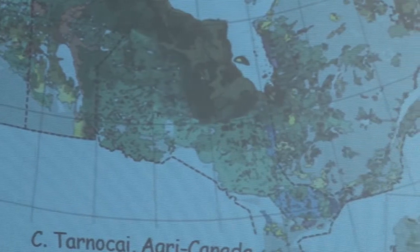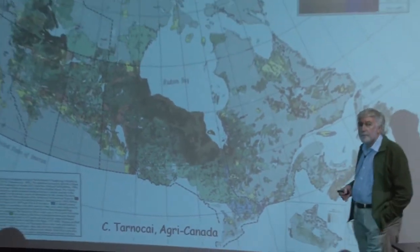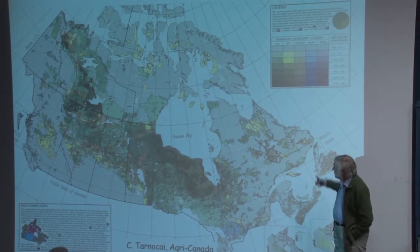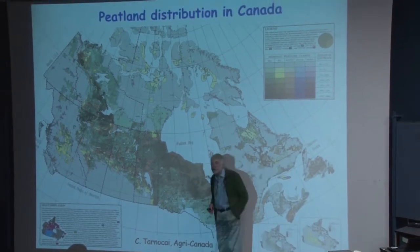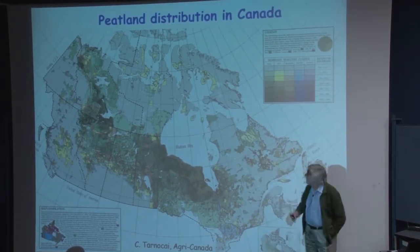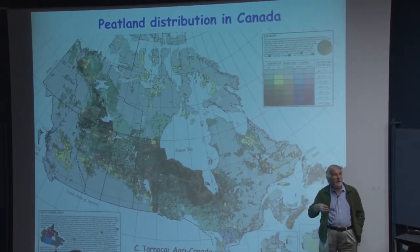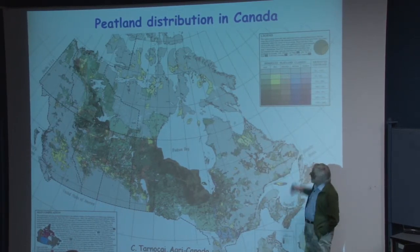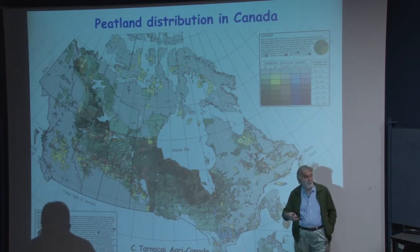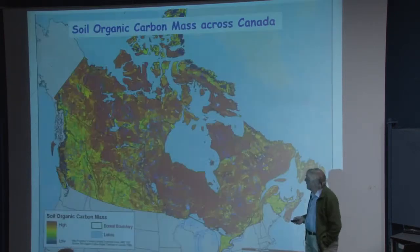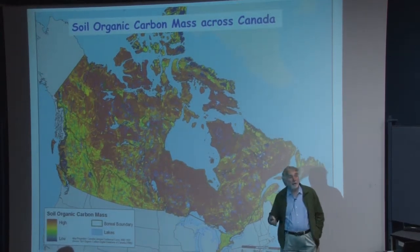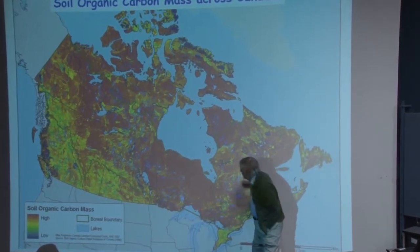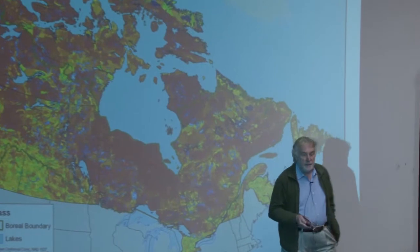Let me start with a map by Charles Tanaka, a wonderful map expressing in the Canadian context the distribution and types of peatlands we have in Canada. As you can see, there's a broad belt occupied by peatlands through Canada, particularly the boreal region. Charles has identified the major types — fens, bogs, and swamps shown in different colors, with density of color indicating the relative proportion of landscape occupied. These peatlands contain large amounts of carbon; through this boreal belt there's a large amount of stored carbon.